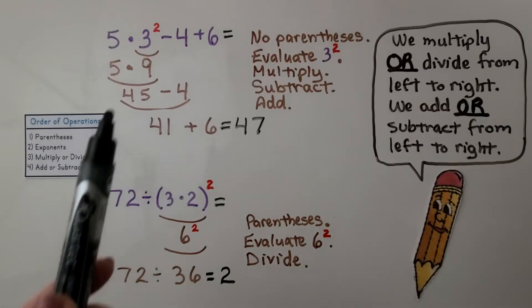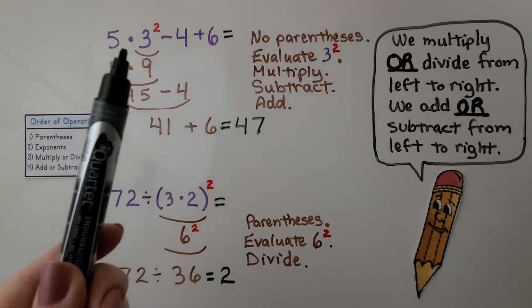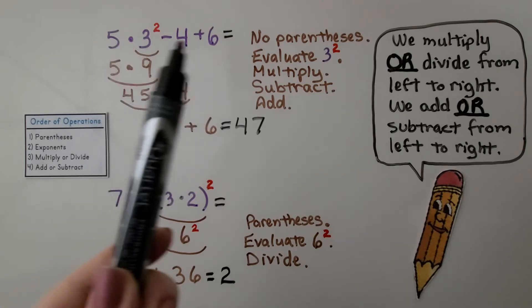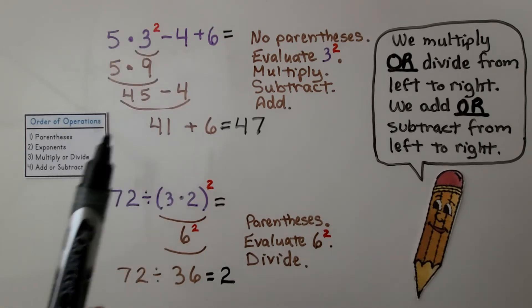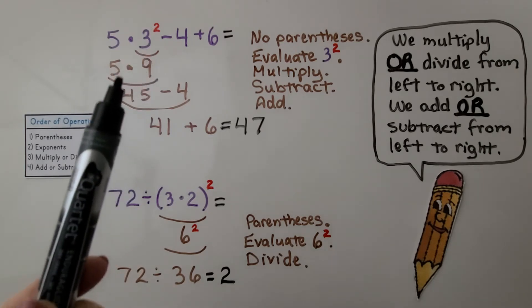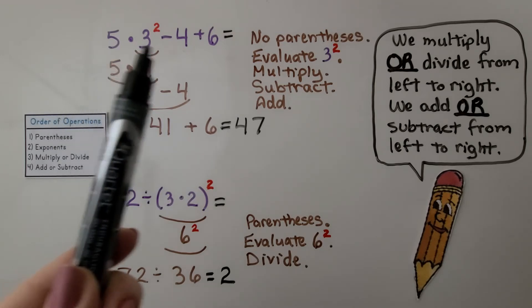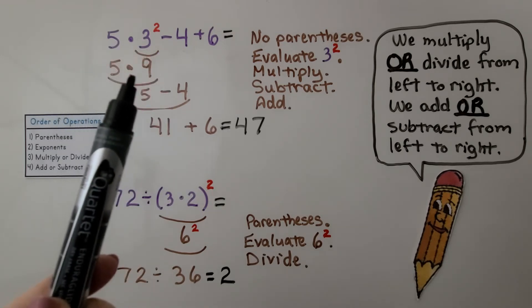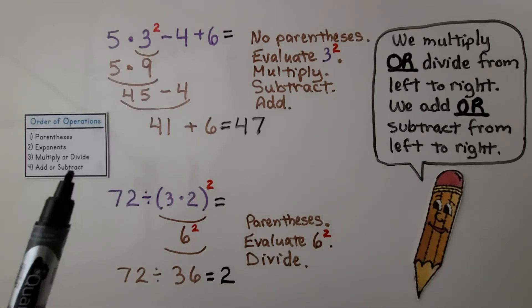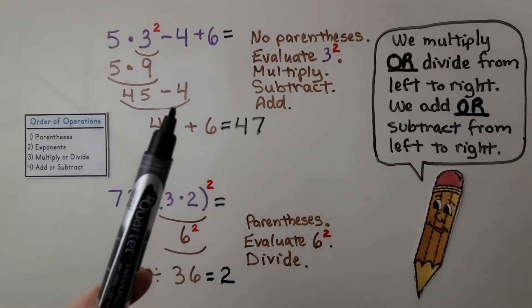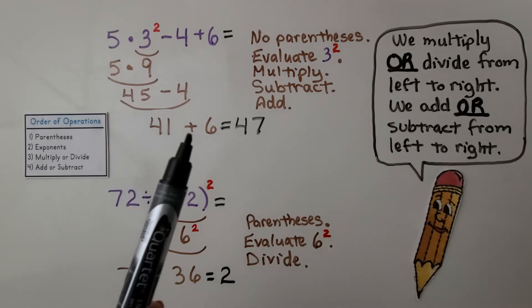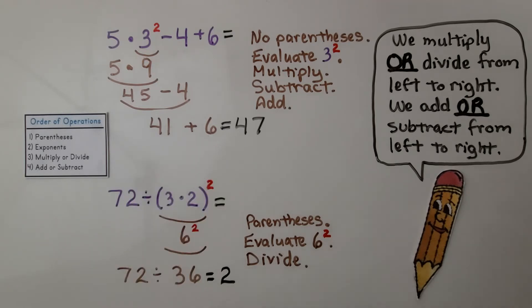We have two problems. The first is 5 times 3 raised to the second power minus 4 plus 6. There are no parentheses, so we go to the exponent. We evaluate 3 raised to the second power, which is 9. Then we multiply: 5 times 9 gives us 45. We add or subtract from left to right — subtraction comes first, so 45 minus 4 equals 41. Then we add: 41 plus 6 equals 47.